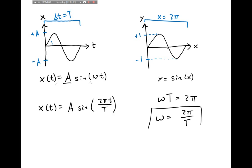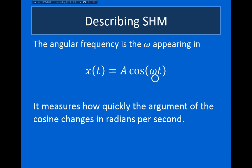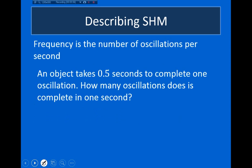So I can write the position as A times sine of (2π t / T), where T is the period. This omega is called the angular frequency of the oscillator, and it measures the number of radians that the argument of the sine or cosine changes by in one second. We now have two ways to describe the time dependence: the period and the angular frequency. There's one other quantity called the frequency, which is the number of oscillations the oscillator undergoes in one second.